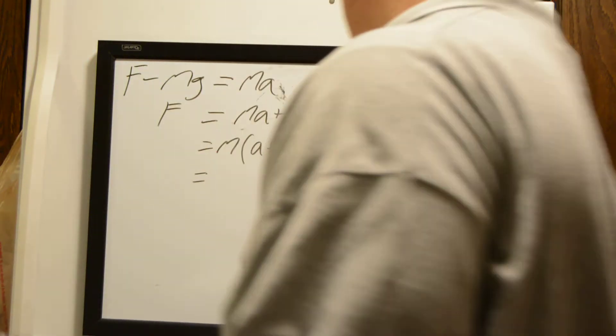Setting up the equation: net force equals the upward force F minus mass times gravity, and that equals mass times acceleration. Rearranging, F equals mass times acceleration plus mass times gravity, which factors to mass times the quantity acceleration plus gravity.